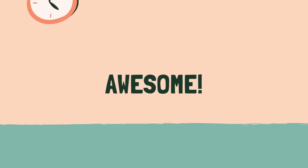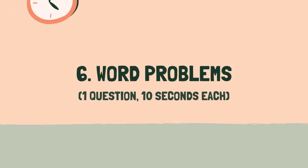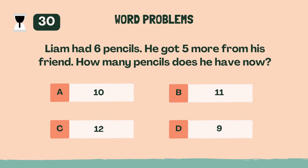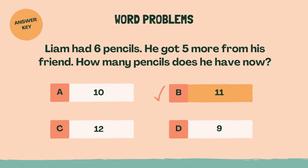Awesome. Last category coming up. Category 6: Word Problems. 3, 2, 1, go. Liam had 6 pencils. He got 5 more from his friend. How many pencils does he have now? B, 11.